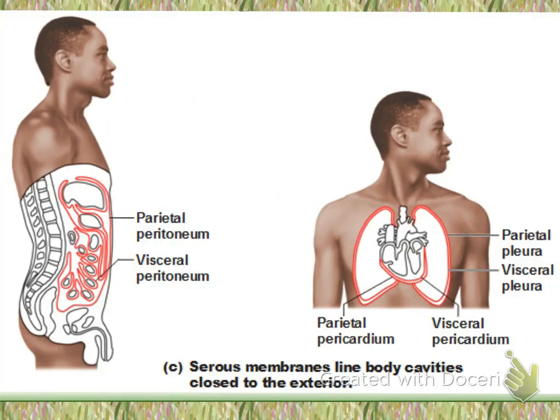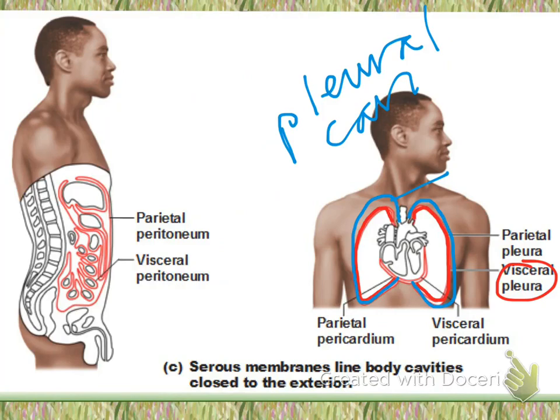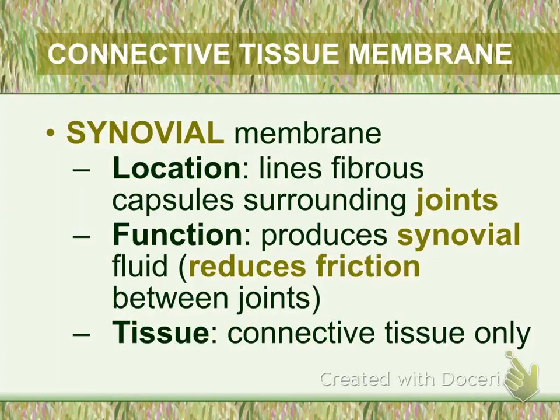When we talk about the lungs, the word we use is pleura. The visceral pleura is the covering directly on top of the lungs, and the parietal pleura is the covering on the outside. The space between those two layers is called the pleural cavity. All of those cavities are filled with serous fluid.